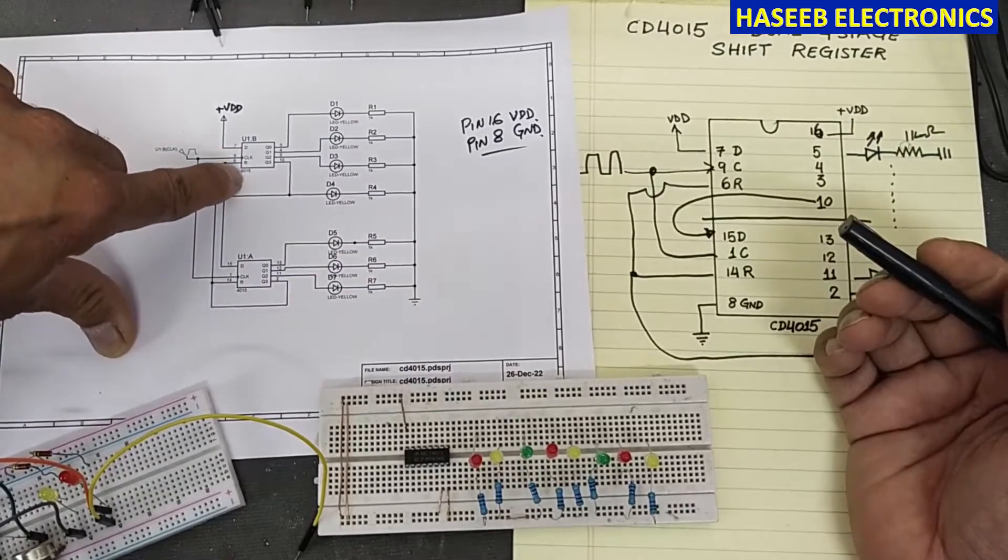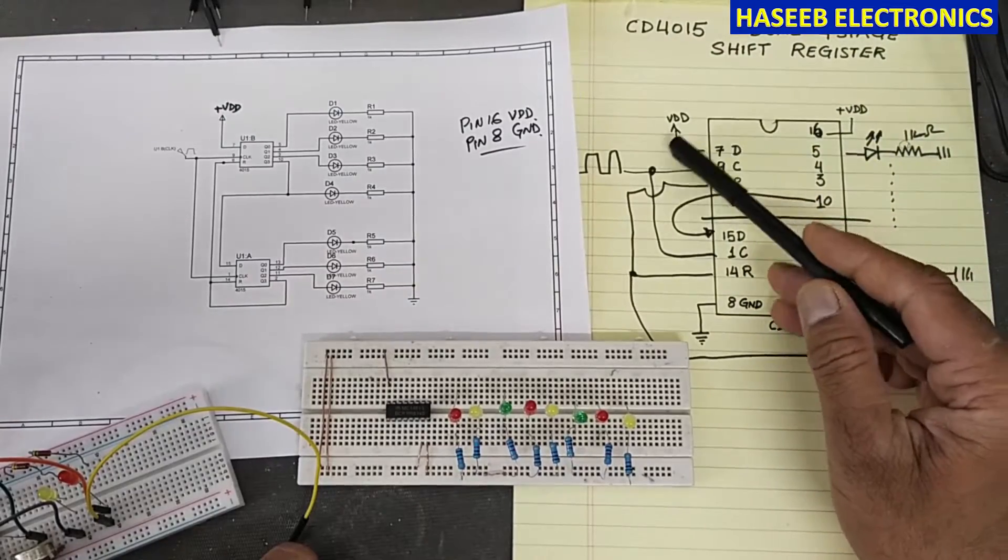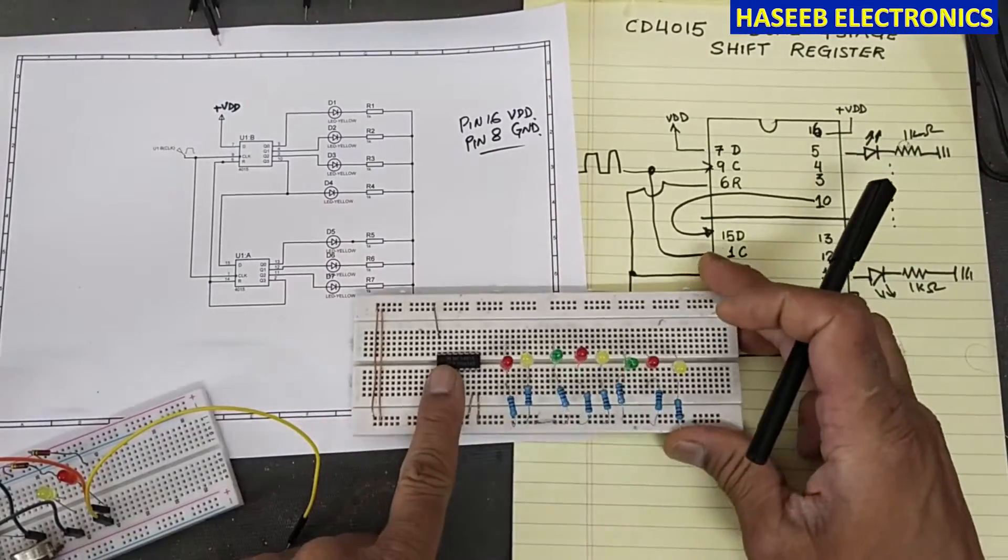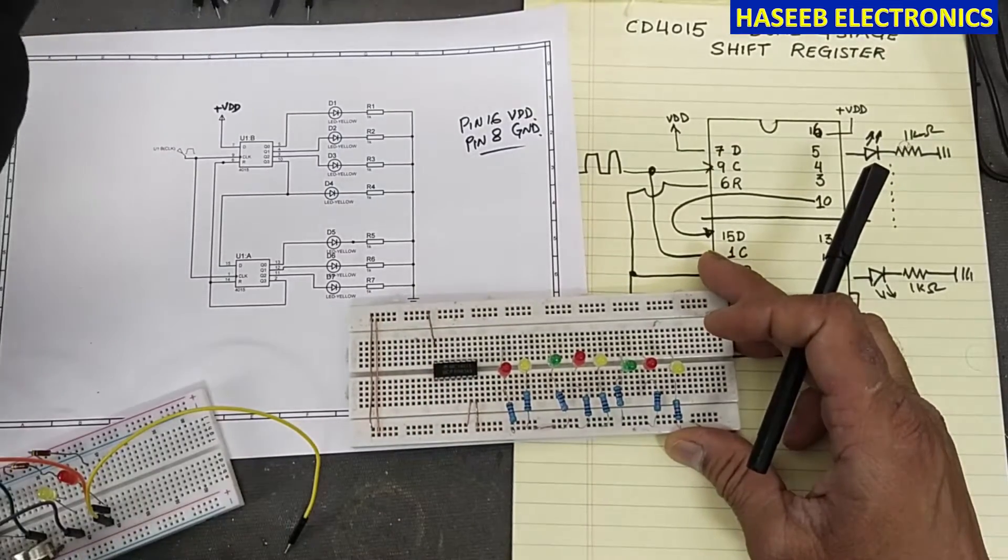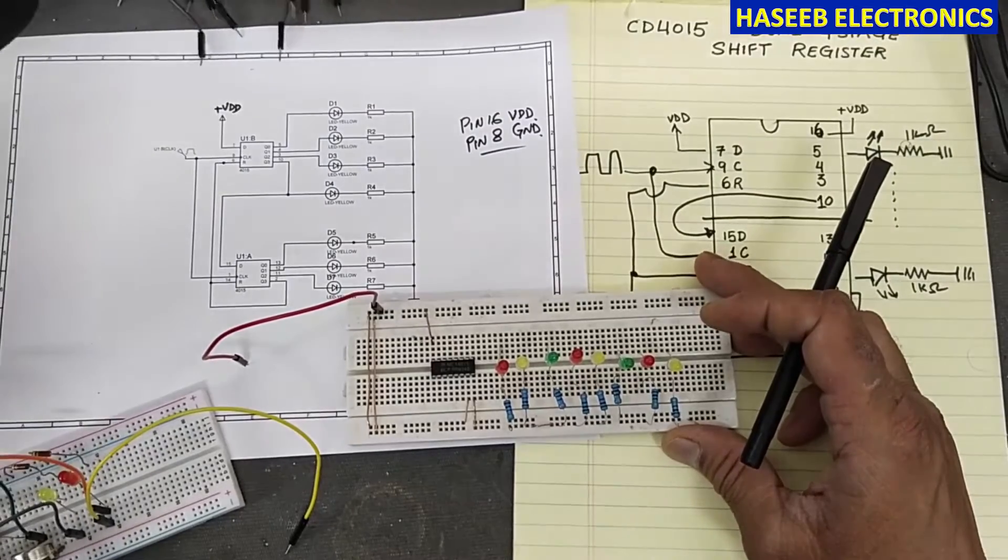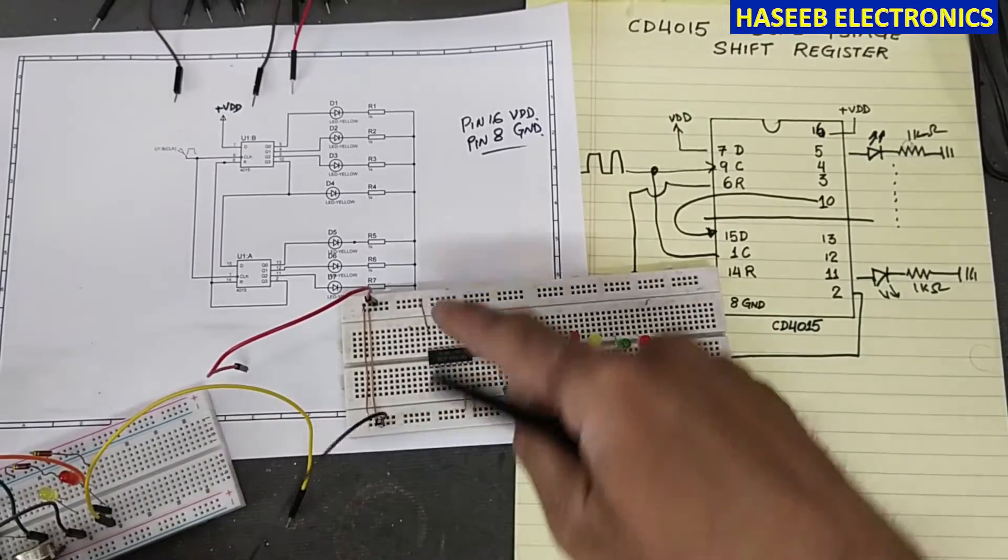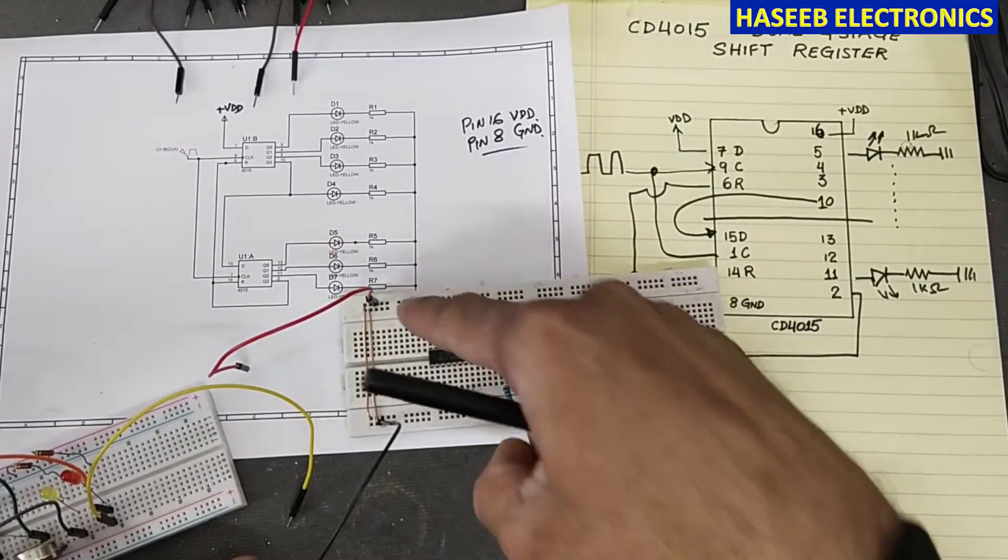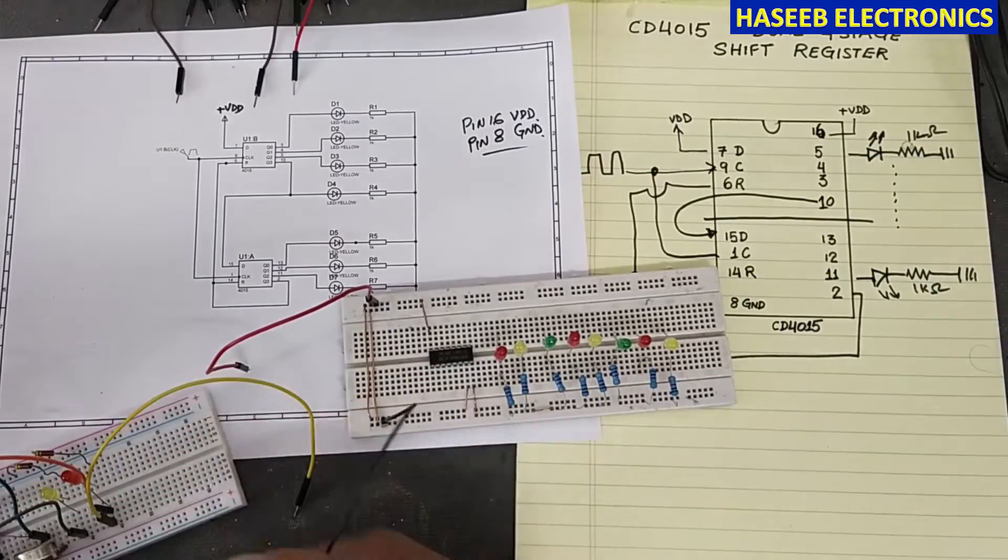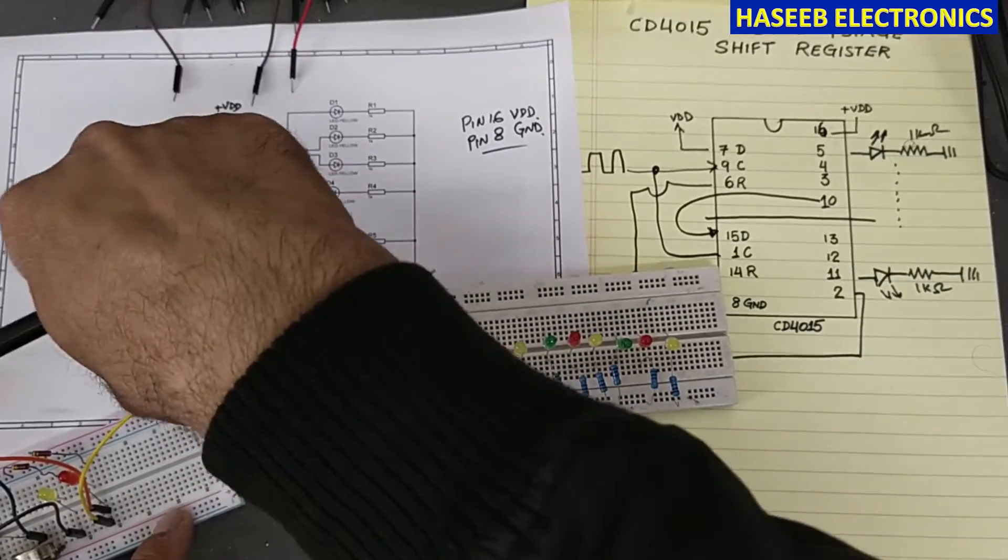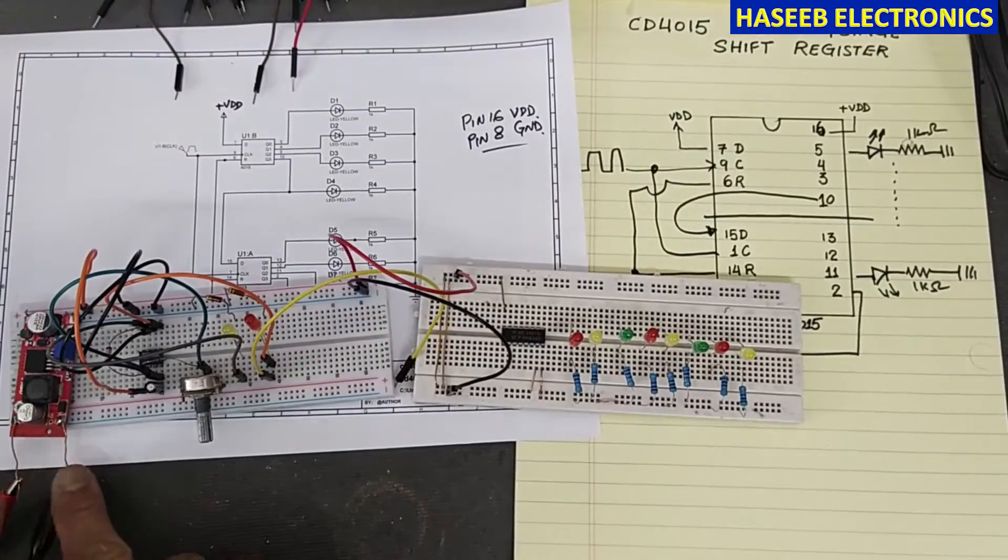This is the CD4015, a dual four-stage shift register. Pin number 16 of this IC is positive, so we will connect positive voltage to pin 16, and pin 8 is ground. We will connect the low side here, positive high side here. Both rails are interconnected to each other using these jumpers.